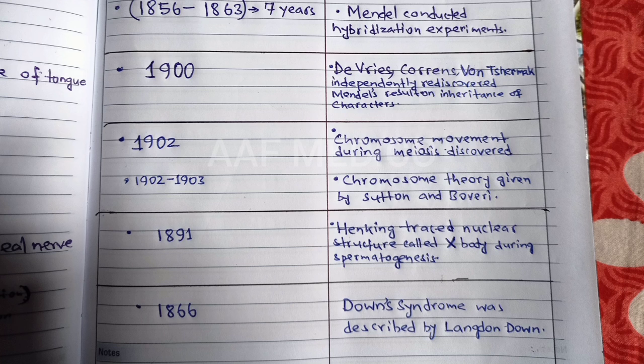And in the year 1902 to 1903, the chromosome theory was given by American physicist Walter Sutton and German biologist Theodore Boveri.